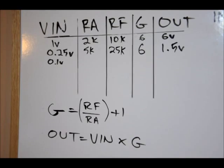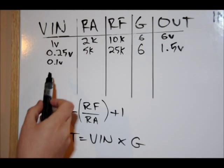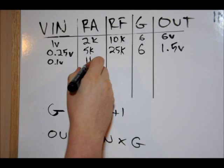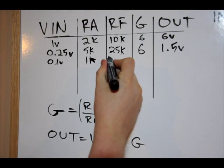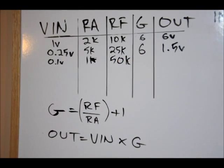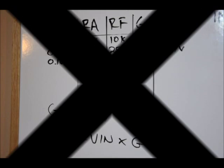So let's try it one more time. We've got an input voltage of 0.1 volts. We've got an RA of 1k and an RF of 50k. Pause it and determine your gain and output voltage.